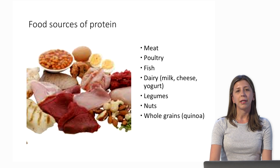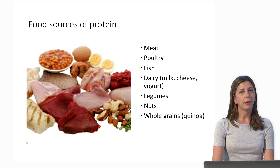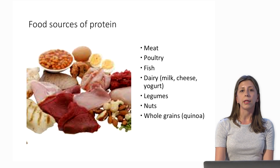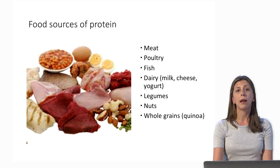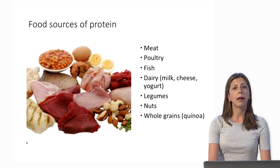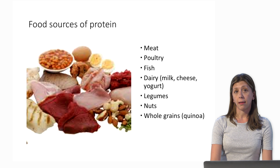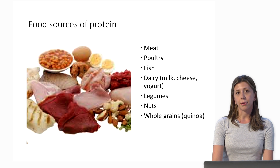What are food sources of protein? Protein is pretty abundant in our food supply. We find protein in pretty much all types of meat — red meat, pork, chicken, and any type of fish. Dairy is a great source of protein: milk, cheese, yogurt, and kefir. Legumes — meaning pretty much beans like chickpeas, black beans, and kidney beans. Nuts including almonds, walnuts, and pecans. And whole grains like quinoa, buckwheat, and amaranth are all great sources of protein.